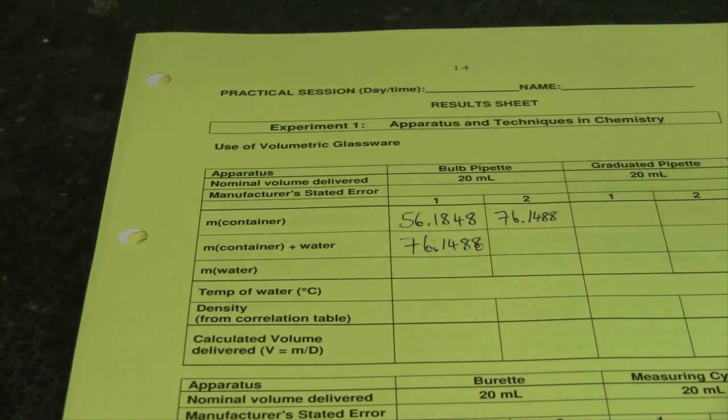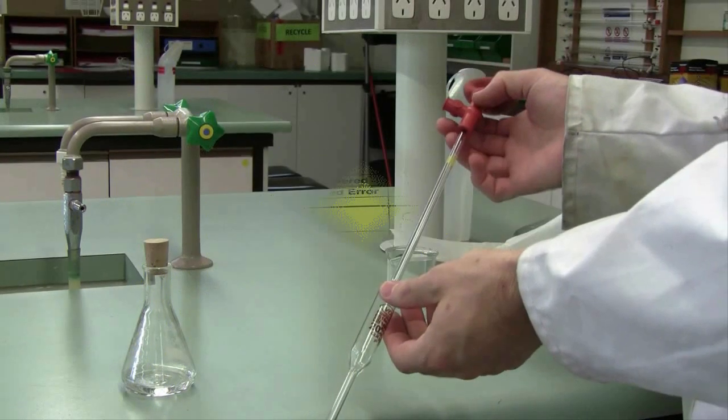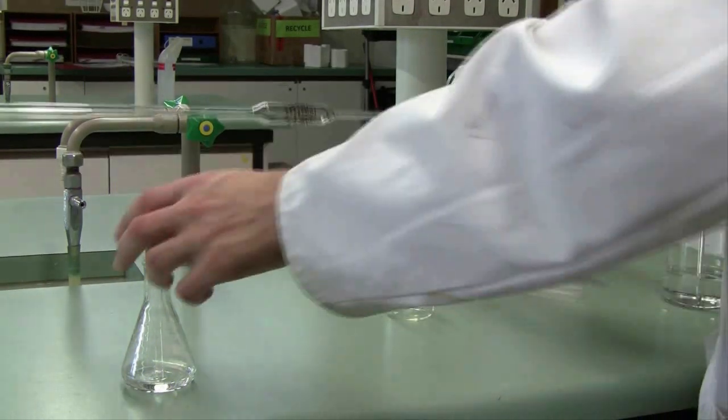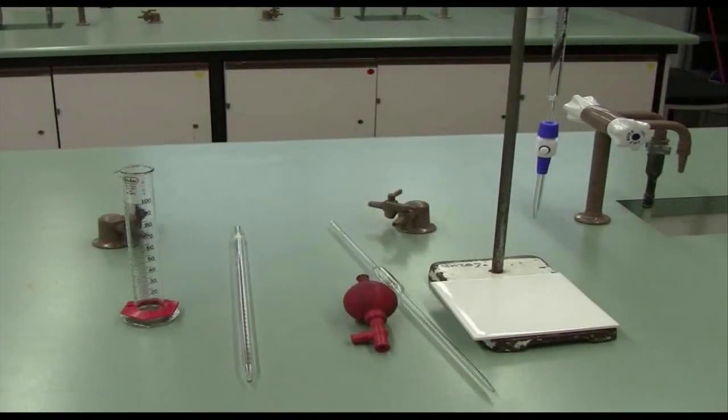There is no need to wash out your flask so here I can add my next 20 mls directly into the conical flask. So your task today will involve you adding 20 mls as accurately and precisely as you can using each piece of equipment shown here twice.